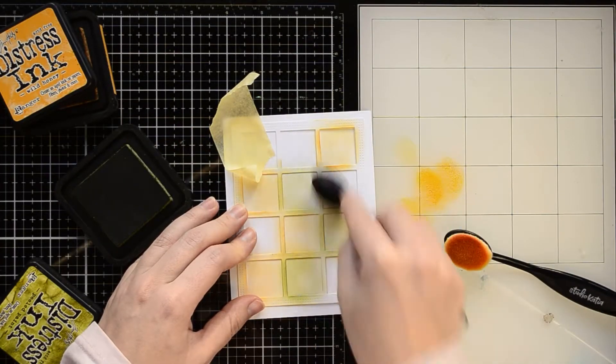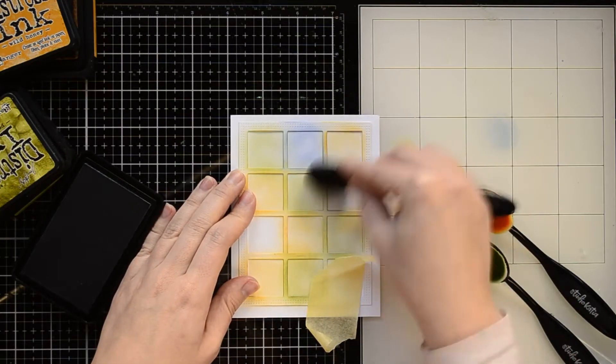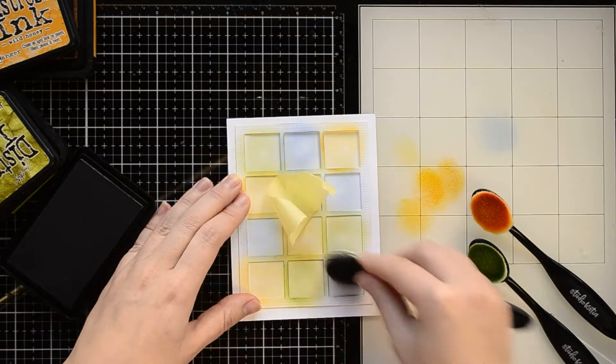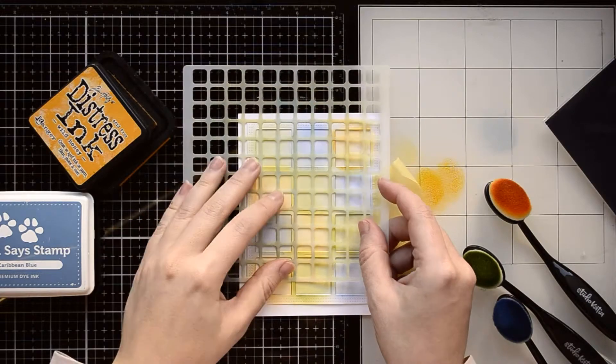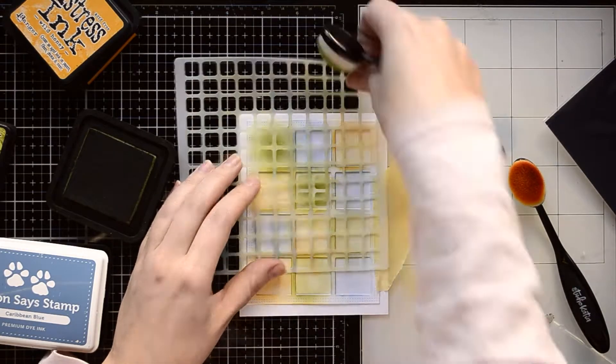I really love this big square pattern and I want to use it with my inks and blending brushes. I picked three colors from Distress Inks and I'm going to apply them randomly, but one color for each square. I keep on blending it out with a lighter hand to get a light shade of each color.